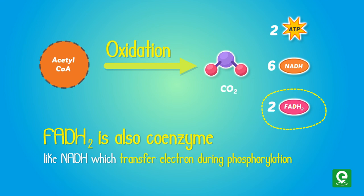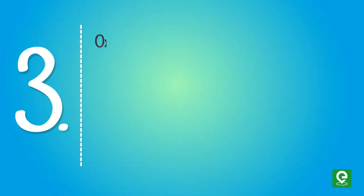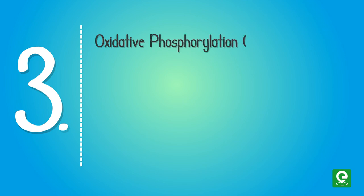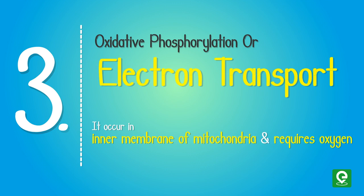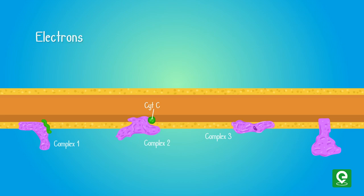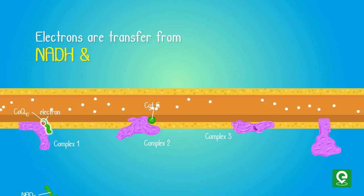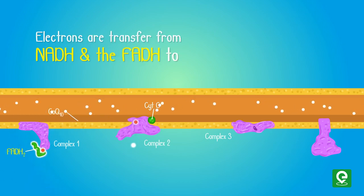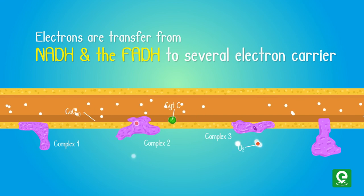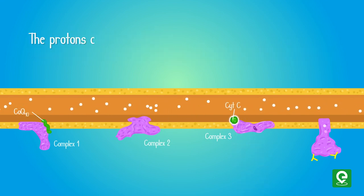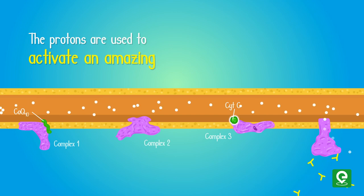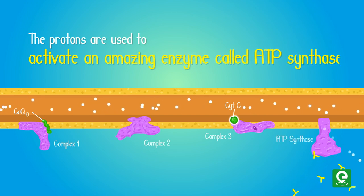The third step is oxidative phosphorylation, or the electron transport chain. It occurs in the inner membrane of the mitochondria and requires oxygen. In this step, electrons are transferred from NADH and FADH2 to several electron carriers, and they are used to create a proton gradient. The protons are used to activate an amazing enzyme called ATP synthase.